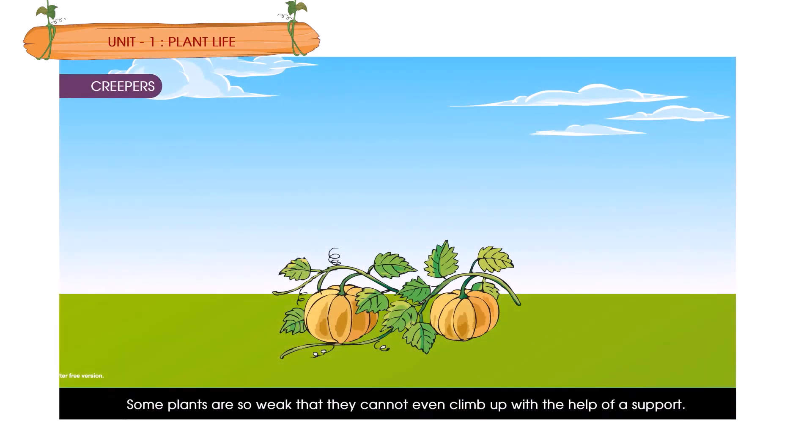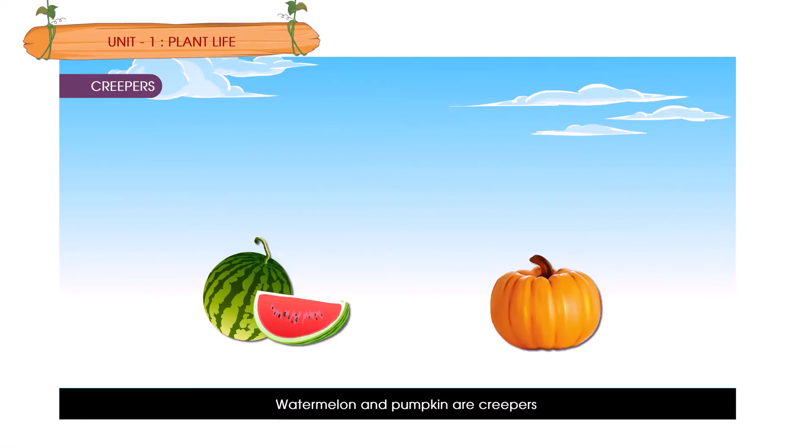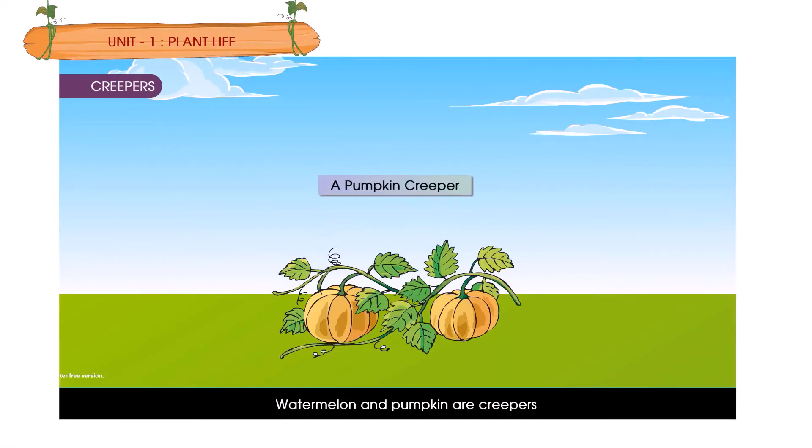Creepers. Some plants are so weak that they cannot even climb up with the help of a support. Such plants are called creepers. Watermelon and pumpkin are creepers. A pumpkin creeper.